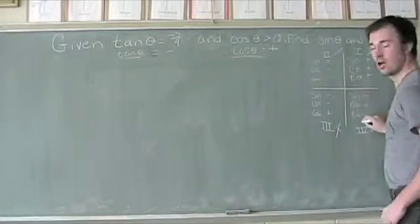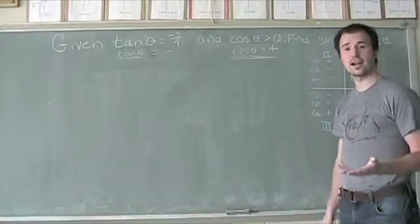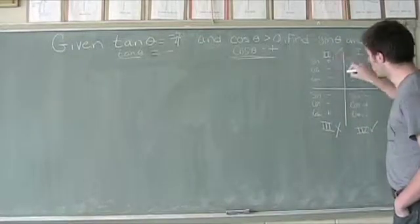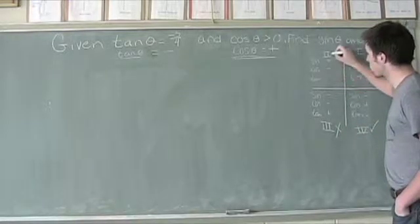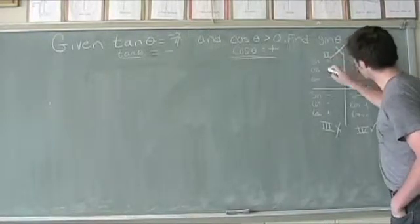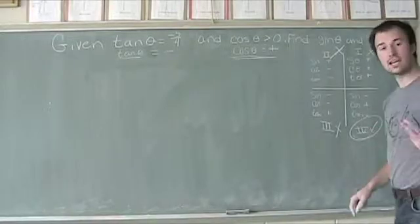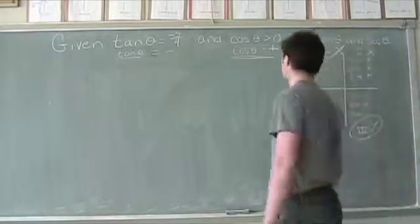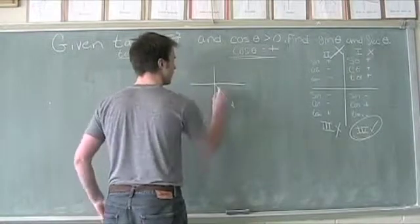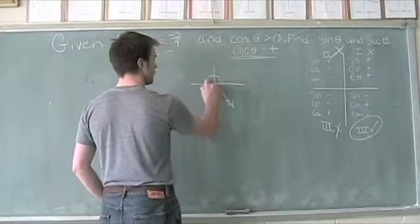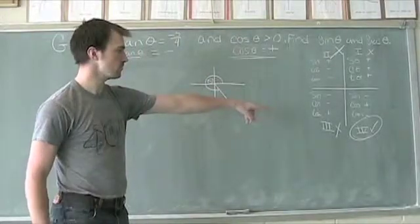It can be either quadrant 2 or quadrant 4. Now using our second piece of information — cosine of theta is positive. Looking at our chart: cosine of theta in quadrant 2 is negative, which is not what we want, so that's eliminated. Cosine of theta is positive in quadrant 4, and tangent is negative there too, so we must be in quadrant 4. Our terminal side is positioned in quadrant 4, and the angle theta goes from the initial side to that terminal side.